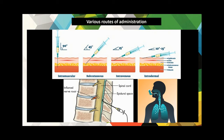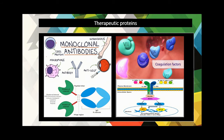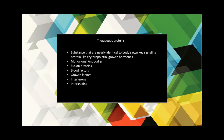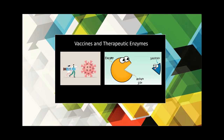Now let's look at examples of biologic drugs. There are three main categories: therapeutic proteins, vaccines, and enzymes. Therapeutic proteins include substances nearly identical to the body's own key signaling proteins — such as erythropoietin, growth hormone, monoclonal antibodies, fusion proteins, blood growth factors, blood factors, interleukins, and interferons. In upcoming videos, each type of drug will be explained separately.